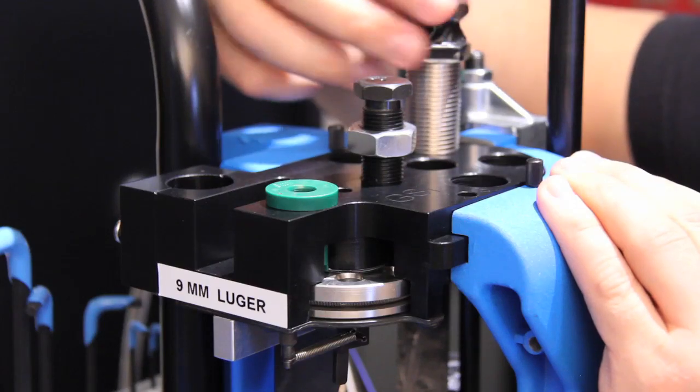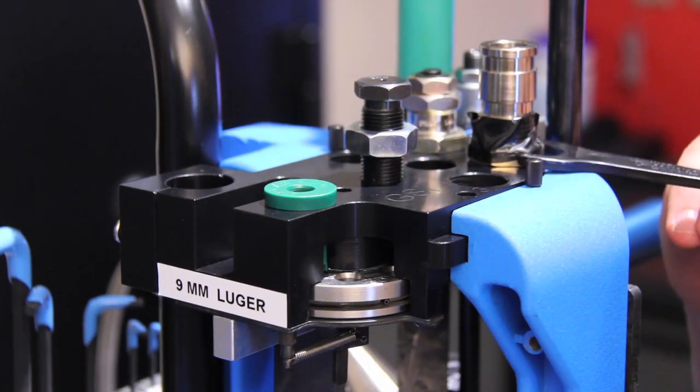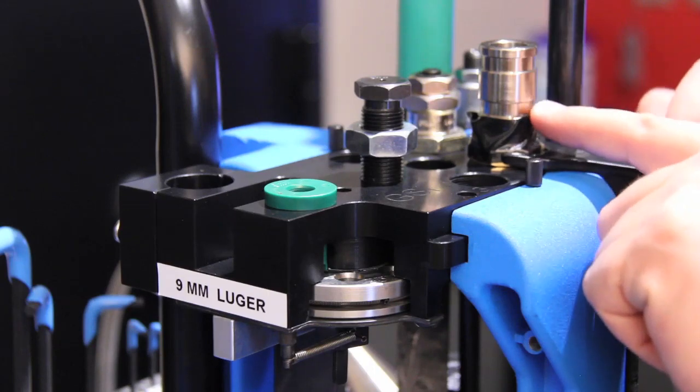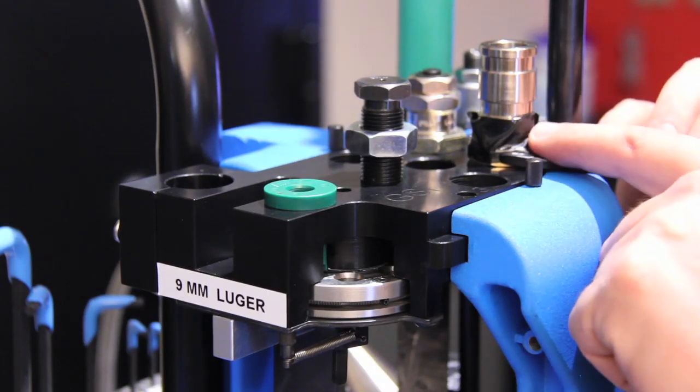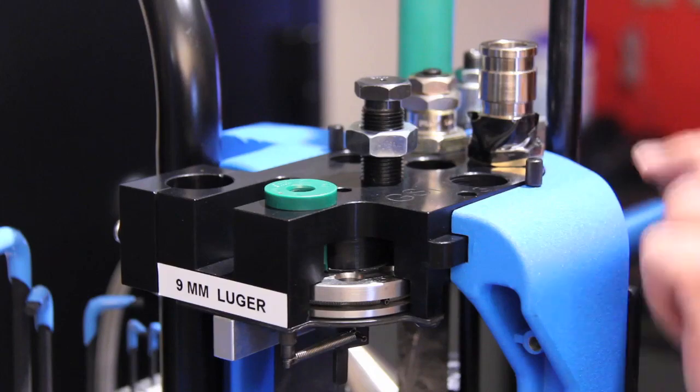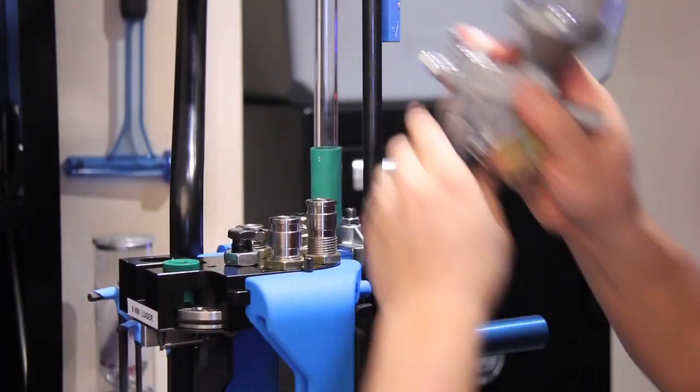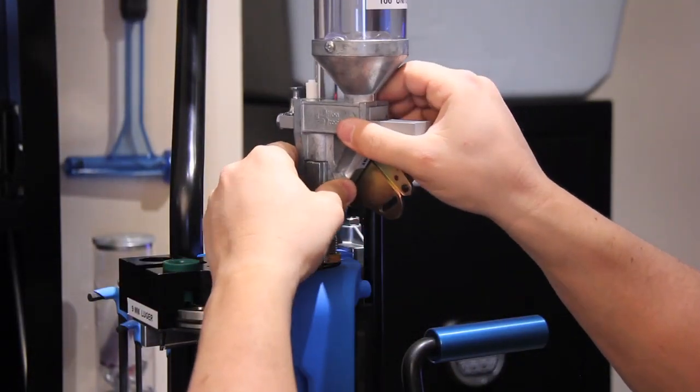Just a quick note: when you put the dies all the way back down, you're going to want to tighten them with the wrench before you take the tape off. Once you get all the dies back in place, you put your powder measure back on.